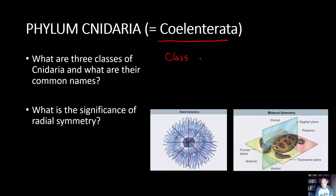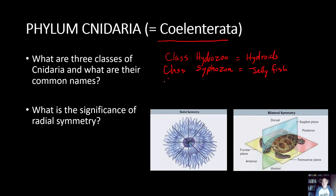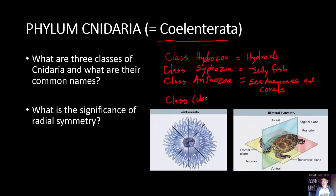The three classes mentioned in the background are: class Hydrozoa, which are the hydroids; class Scyphozoa, which includes the sea jellies or jellyfish; and class Anthozoa, which includes sea anemones and corals — small animals that build large structures called coral reefs. The fourth class, not in the background, is class Cubozoa, commonly called the box jellies because they're box-shaped.